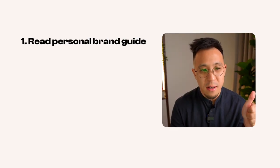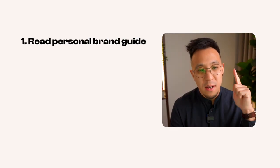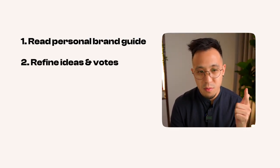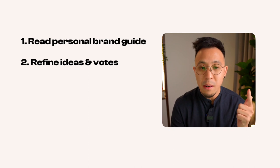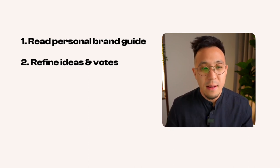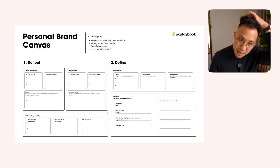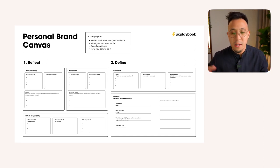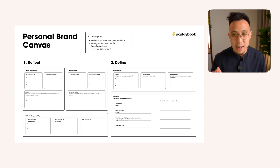First, read the personal brand guide. After this, refine the ideas and voted options that you truly care about — add some if you have new ideas. And then the third thing to do: we actually have a one-page canvas. We just did this in a workshop format because it works easier, but this is the canvas that you'll get to use.